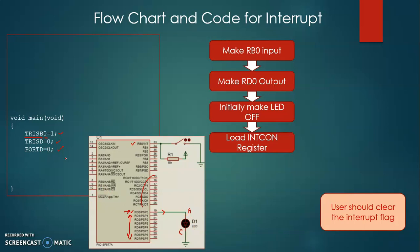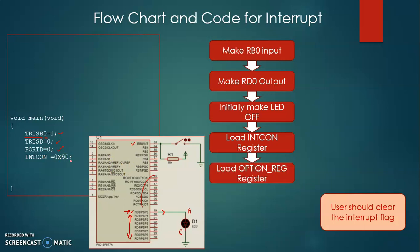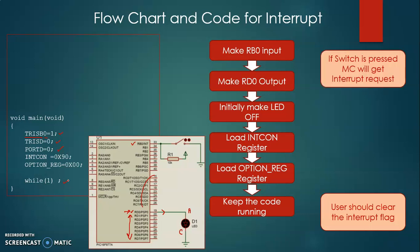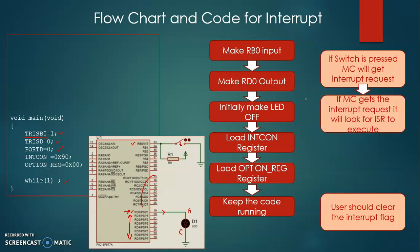Next we load the INTCON register with the value we found earlier: 0x90. We also load the OPTION_REG register with 0x00. After that, nothing else needs to be done in main, so we write a while(true) loop with a semicolon — it does nothing and just loops. When the switch is pressed the microcontroller detects an interrupt request and looks for the ISR. ISR stands for Interrupt Service Routine — it is the code that executes when the interrupt occurs.